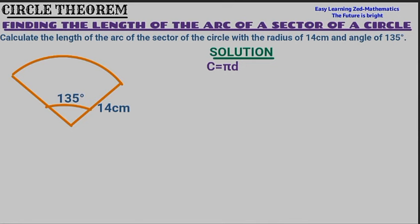In this question we're going to find the length of the arc. To do that, we're first going to find the perimeter or circumference of this sector. We'll do the actual calculations for the perimeter, and then I'm going to show you how you can find the length of the arc. We're going to use the formula pi multiplied by diameter.